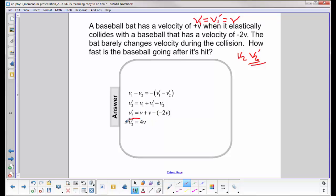So our final velocity of the baseball is 4v, and it reverses direction. It was headed towards the bat, now it leaves with double the velocity and in the different direction of 4v.